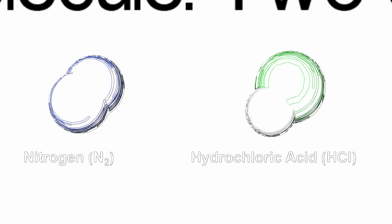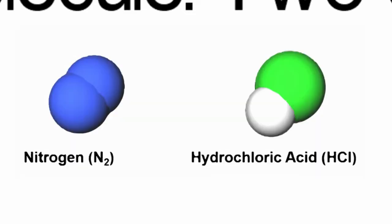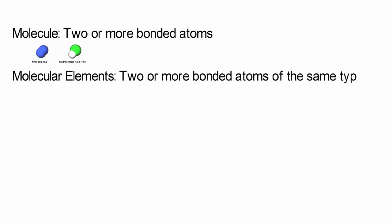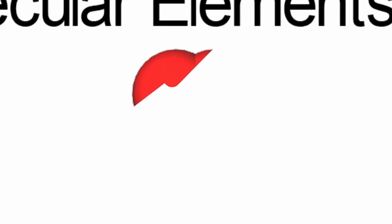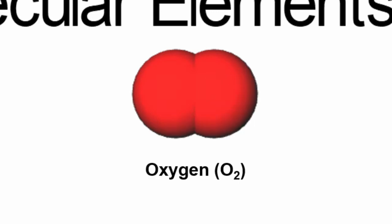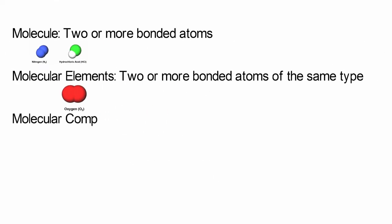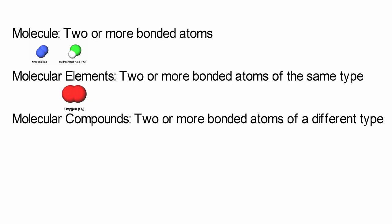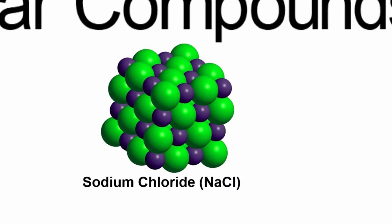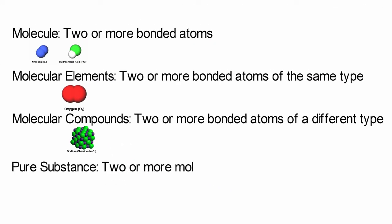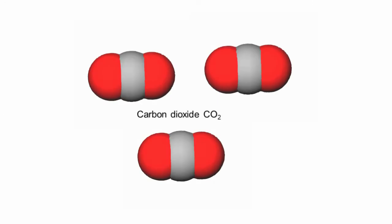The first definition is molecule. A molecule is two or more bonded atoms. A molecular element is two or more bonded atoms of the same type, like a pure sample of silver or a molecule of oxygen gas. A molecular compound is two or more bonded atoms of different types, like salt or caffeine in coffee. A pure substance is two or more molecules or atoms of the same type, such as a canister of carbon dioxide gas or a vial full of liquid mercury.